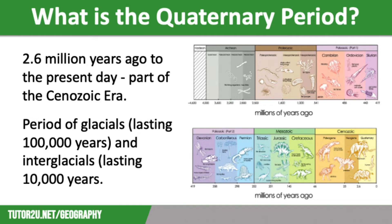When we think about climate change, we often talk about what has happened since industrialisation, which makes sense as that's when we started to see evidence of man-made climate change. However, it is also important to consider how the climate had changed over a much longer period of time. The Quaternary period stretches from 2.6 million years ago to the present day, a time that has seen a global drop in temperature and the beginning of the most recent ice age.